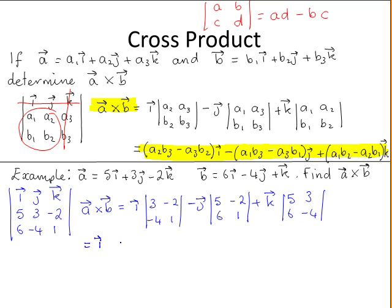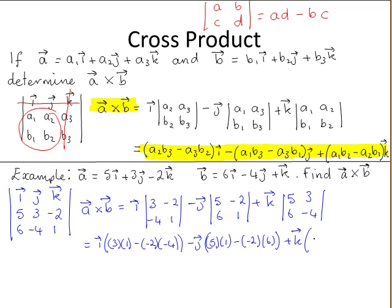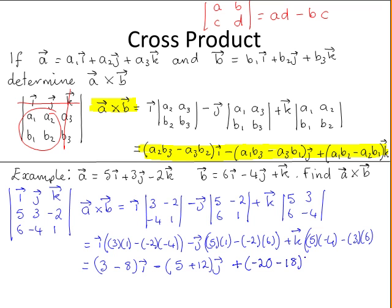So that equals i times (3 times 1 minus minus 2 times minus 4), minus j times (5 times 1 minus minus 2 times 6), plus k times (5 times minus 4 minus 3 times 6). This simplifies to: 3 minus 8 for i, minus 5 plus 12 for j, and minus 20 minus 18 for k. Which gives minus 5i, minus 17j, minus 38k. So this is the cross product of vector A with vector B.